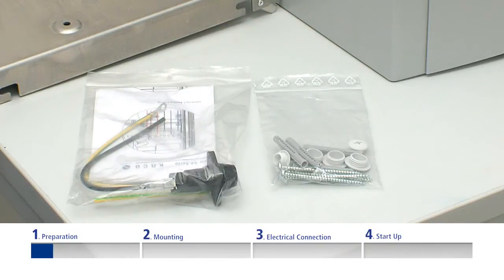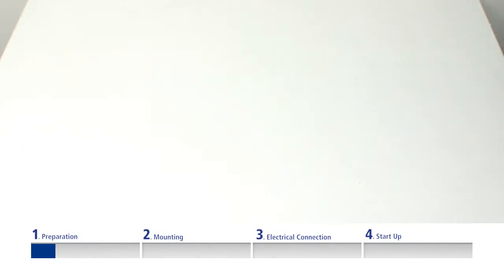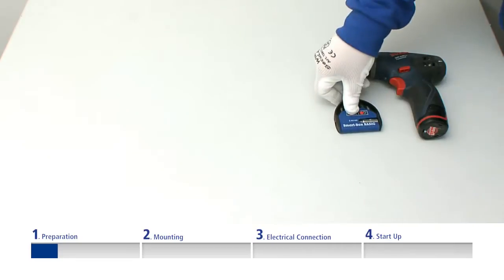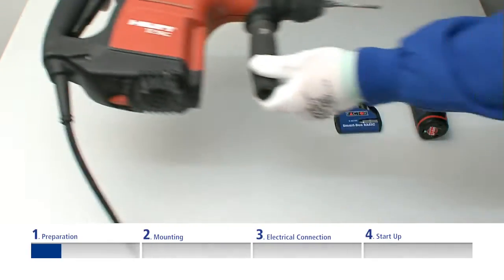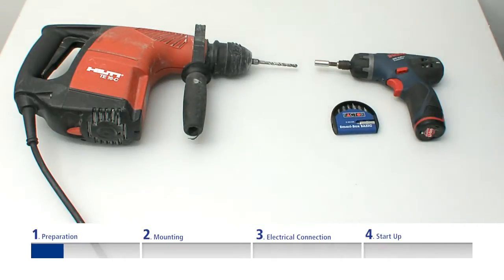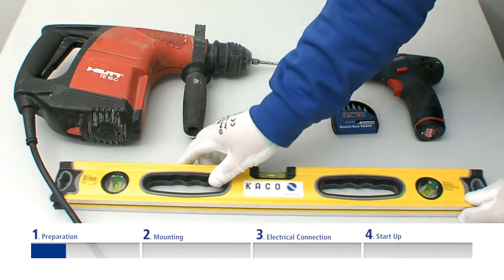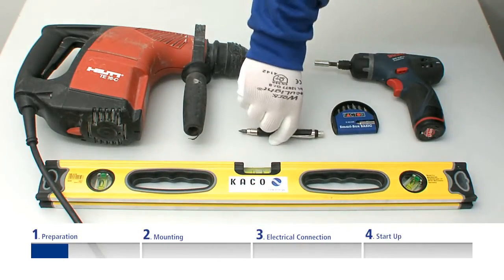In addition, you will need the following materials and tools: a battery-operated screwdriver complete with a bit for Phillips recess head screws, a hammer drill with 6mm drilling head, a spirit level, and a pencil to mark drilling holes.